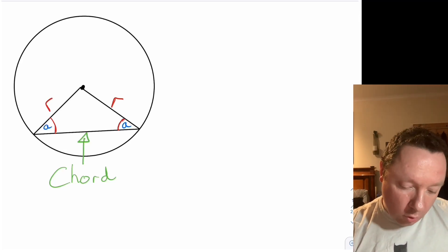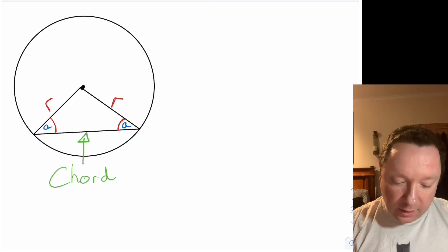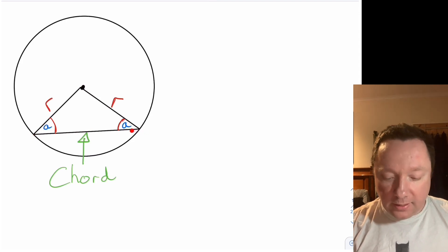We've got a circle and we've drawn two radiuses, one on this side and one on that side. If we connect that up to make a triangle, this bottom line here, any line that isn't a diameter or radius going across a circle is called a chord.